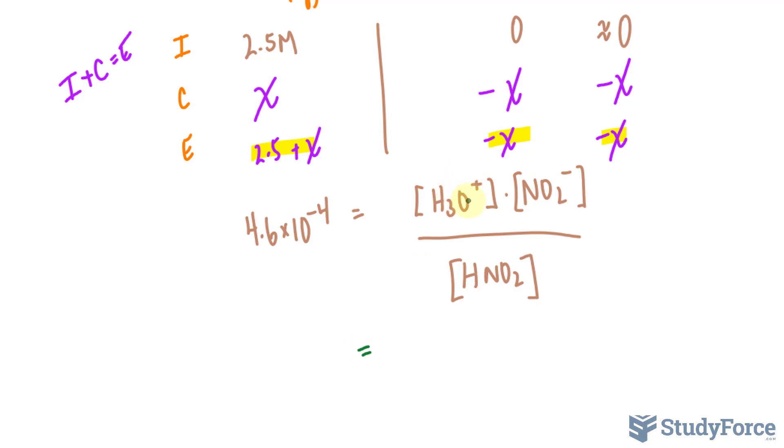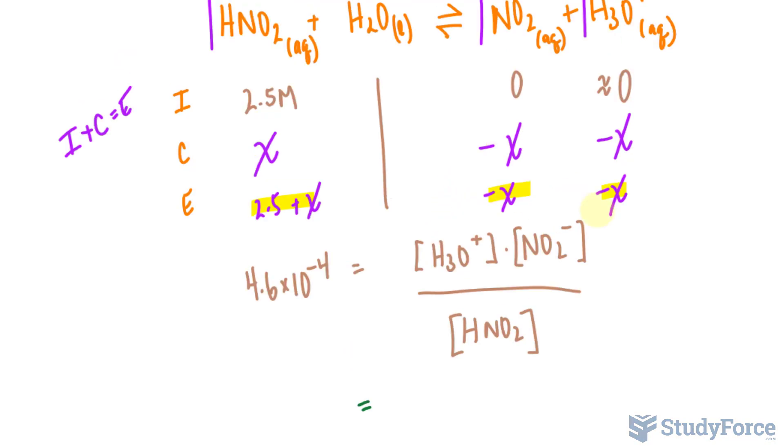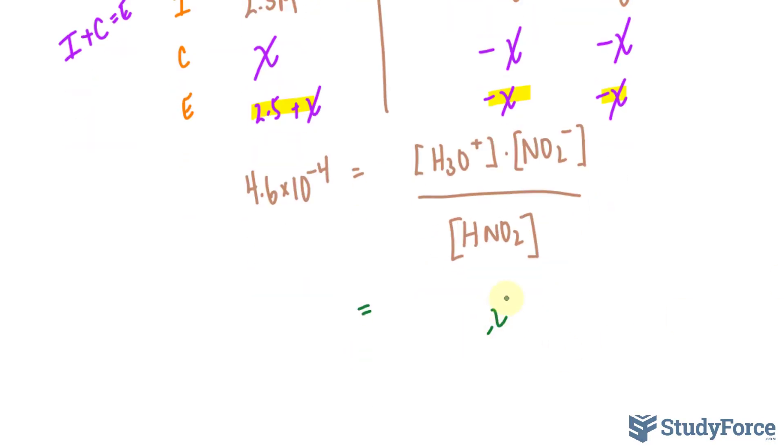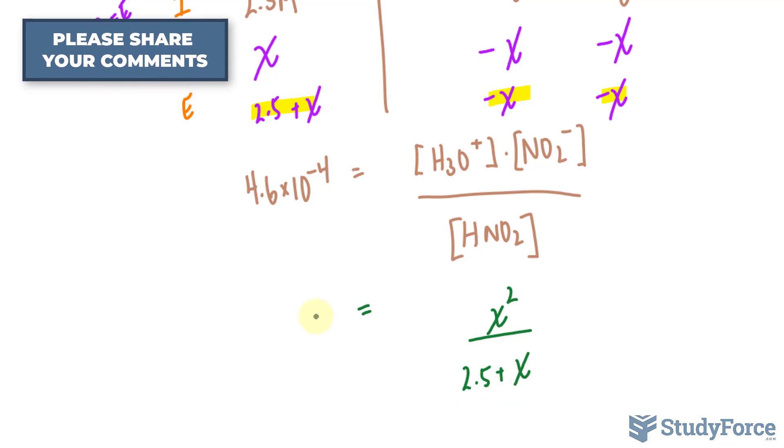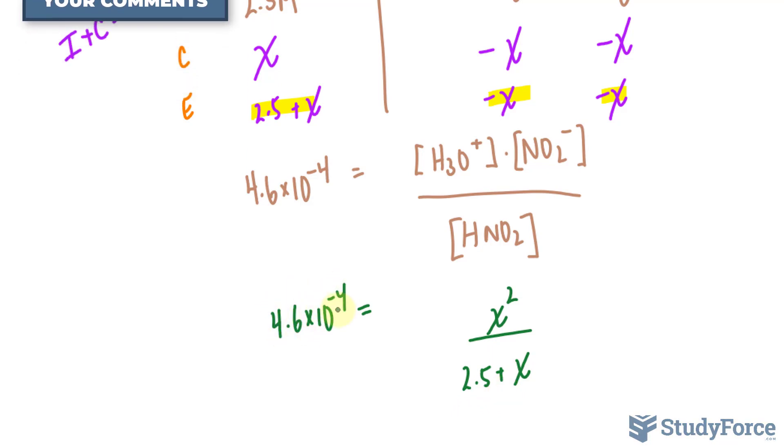So negative X times negative X gives us X squared. So X squared at the top, and at the bottom I'll write down 2.5 plus X is equal to 4.6 times 10 to the power of negative 4. We need